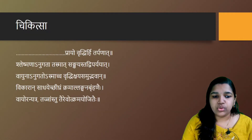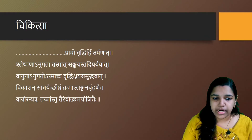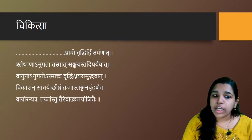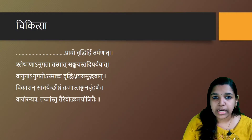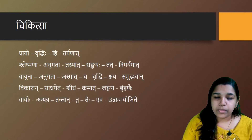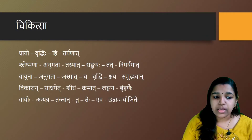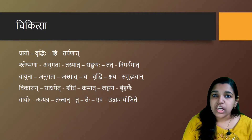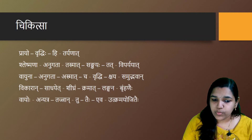The Chikitsa of Dosha, Dhatu and Malas is described next. When the Aashraya is getting Vrithi or Kshaya, then by its opposite — Tath Viparyayaat — the treatment is determined.